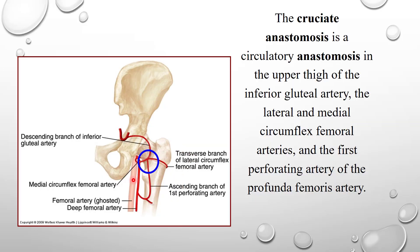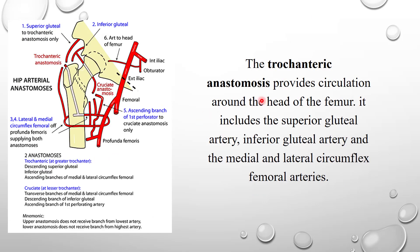The cruciate anastomosis in the upper thigh is formed by the descending branch of the inferior gluteal artery, the ascending branch of the first perforating artery, and two transverse branches — one of the lateral circumflex femoral and one of the medial circumflex femoral. Three of these branches come from the profunda femoris artery: the lateral circumflex femoral, medial circumflex femoral, and first perforating artery. One branch is from the inferior gluteal, a branch of the internal iliac artery.